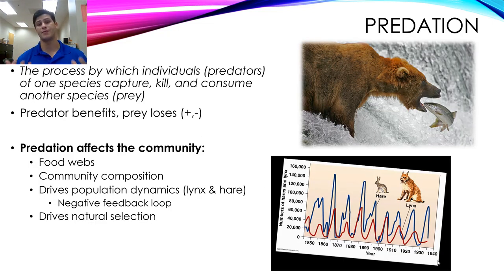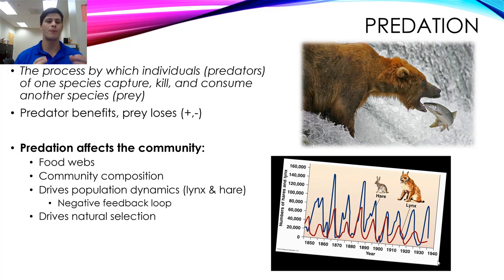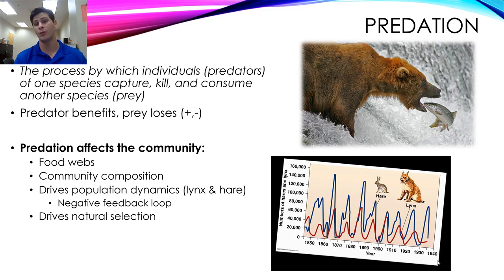The next interaction is predation — the process by which one individual, a predator of one species, captures, kills, and consumes another individual from a different species, which is your prey. The predator clearly benefits and the prey is clearly negatively affected. A great example is the grizzly bear eating a salmon. Predation affects community dynamics: it governs the structure of food webs, dictates community composition by choosing which prey to eat, and controls the abundances and populations of prey organisms.